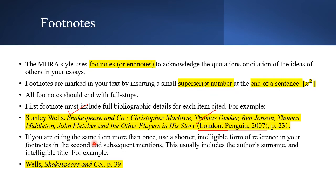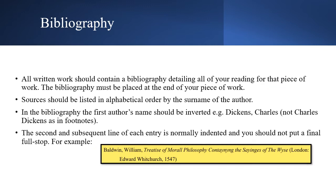If you are citing the same item more than once, you can use a shorter, intelligible form of reference in subsequent footnotes. Use the author's surname and an intelligible title. For example, the first time you cite Stanley Wells you give full details; the second time you write: Wells, Shakespeare and Co., p. [number]. You don't need to repeat the publisher or place of publication.